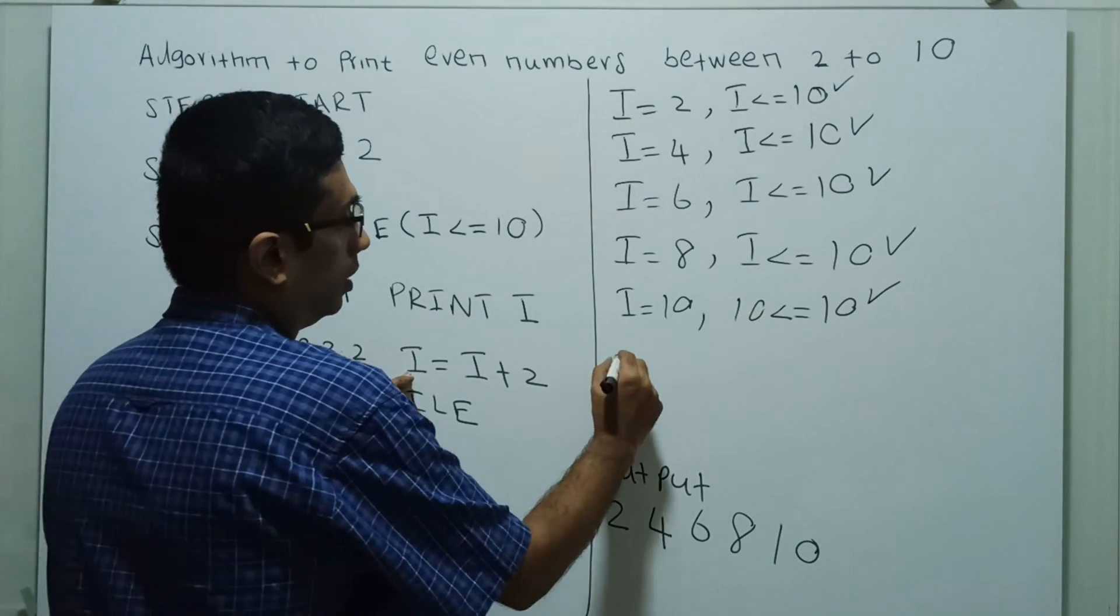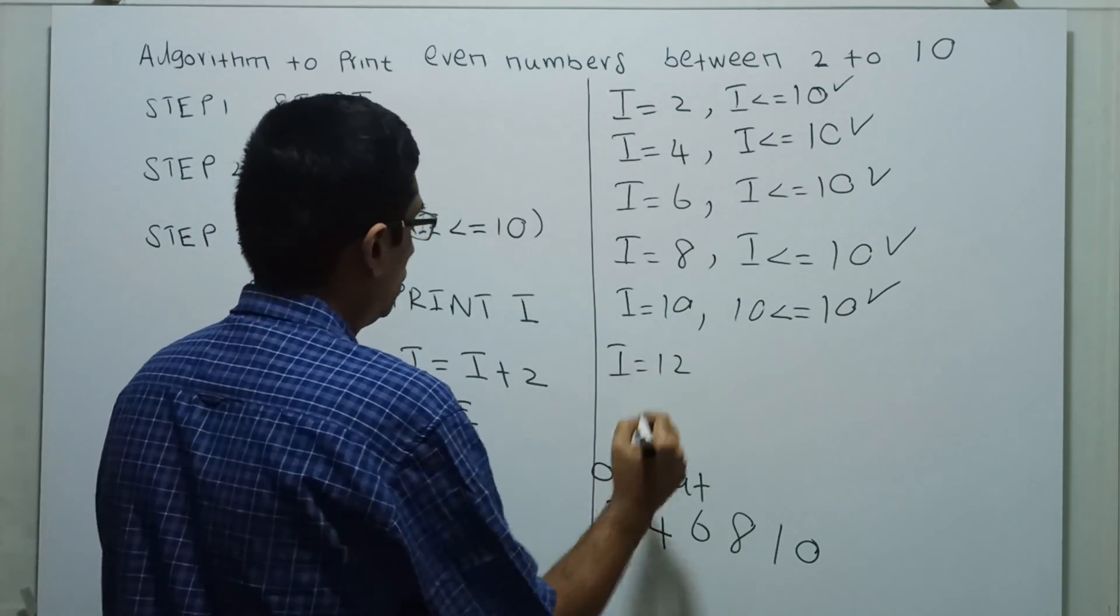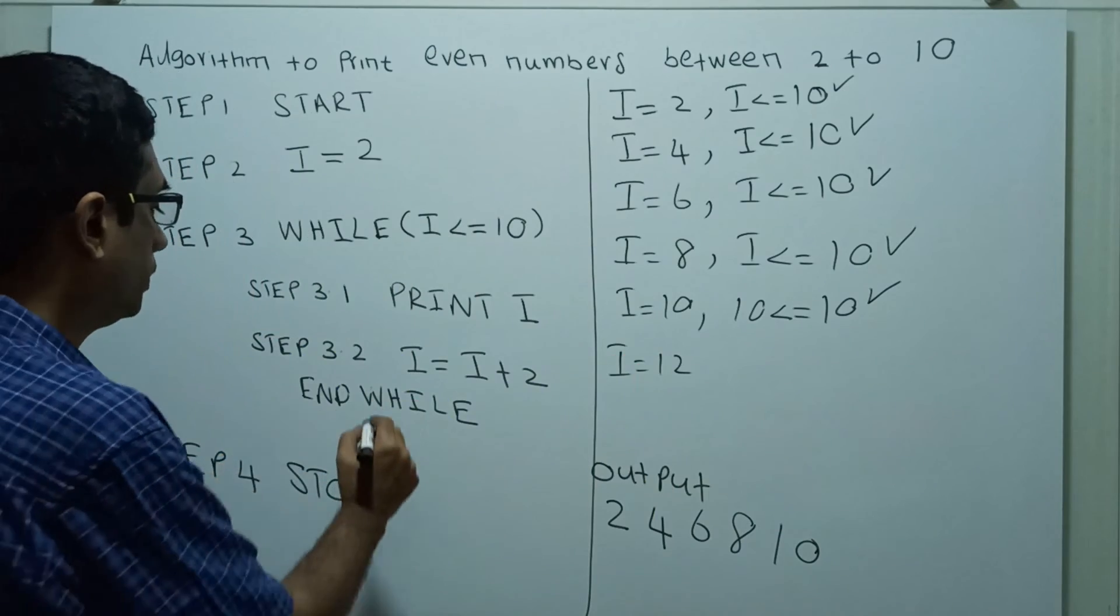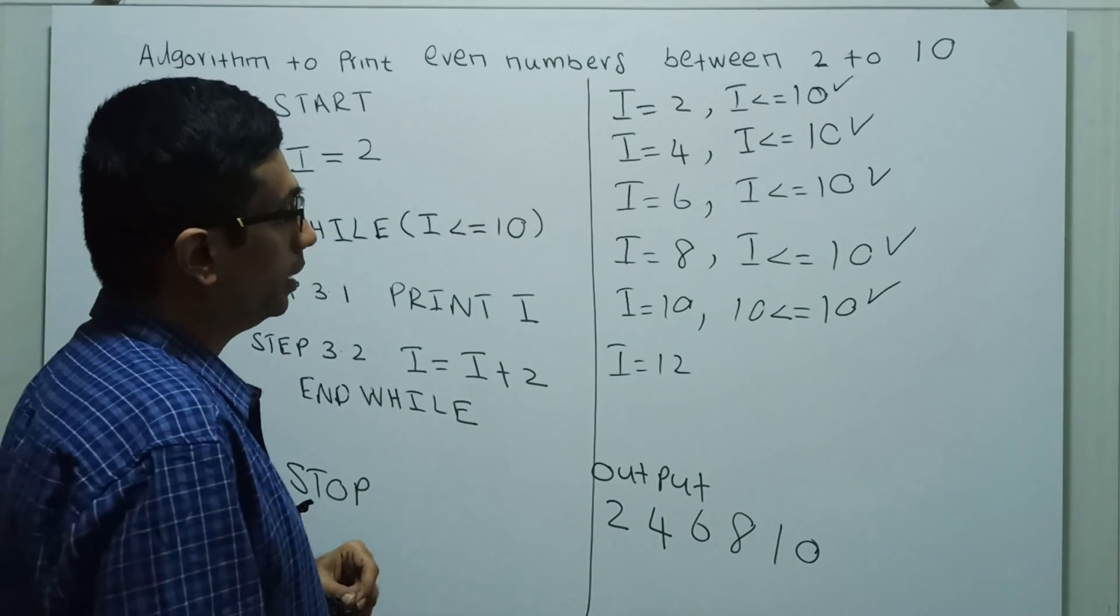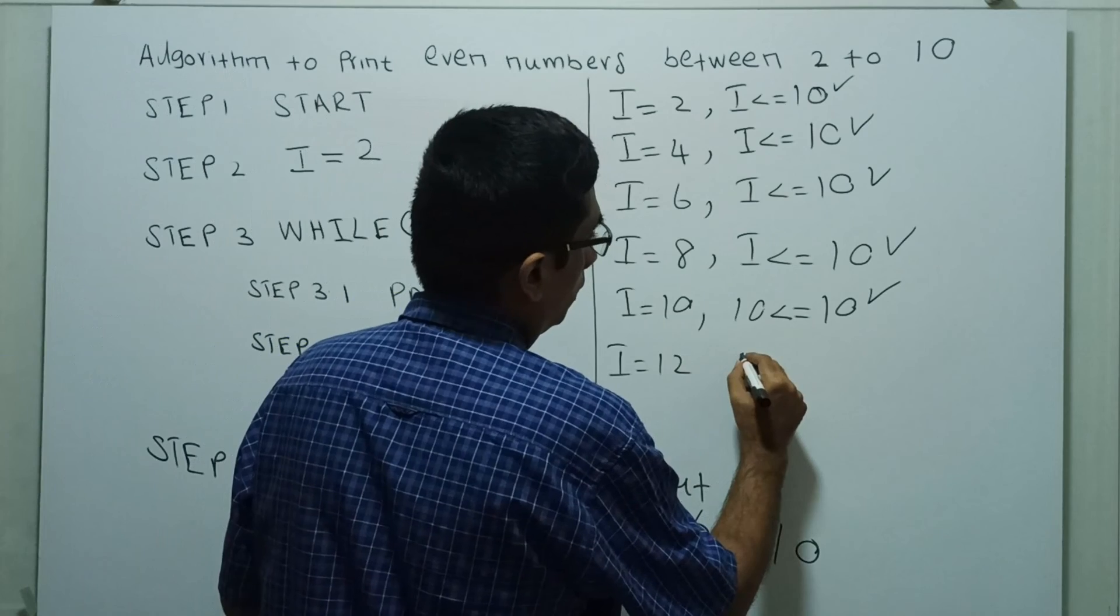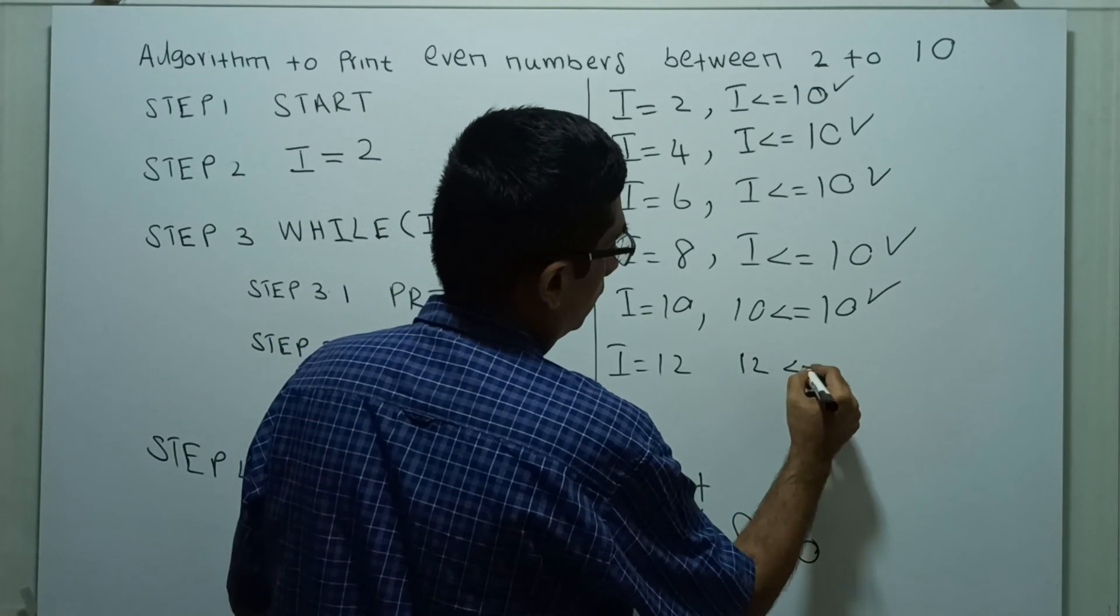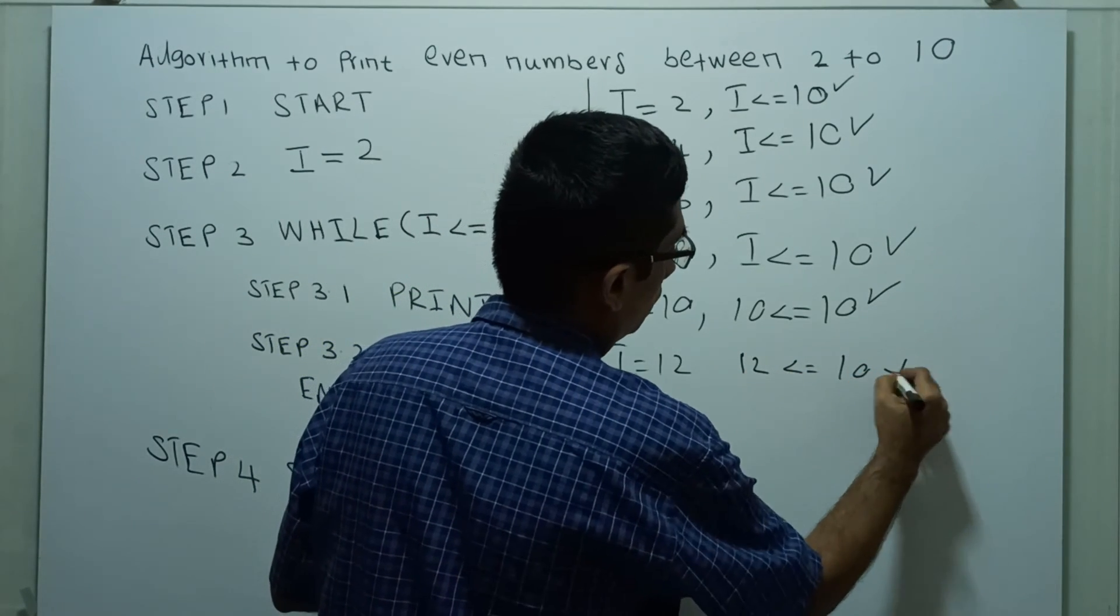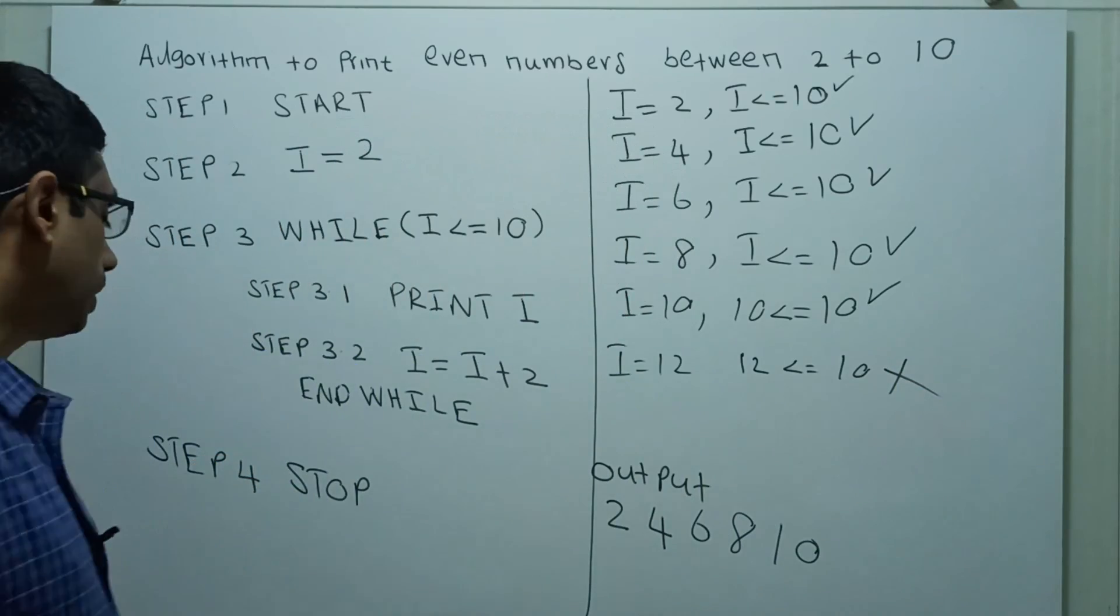I equal to I plus 2. I equal to 12 now. Then I less than or equal to 10. I less than or equal to 10 which is false, so we come to the end of the algorithm.